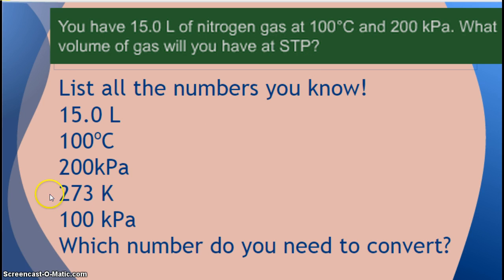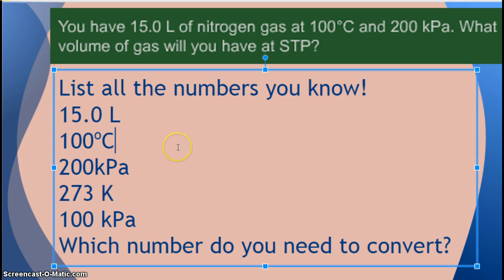They said STP. I know my standard temperature is 273 Kelvin. My standard pressure is 100 kilopascals. So, ooh, what number do we have to convert? We have to convert our degrees Celsius, right? So we're going to take our degrees Celsius and add 273, and we get 373 Kelvin, because your temperatures all have to be in Kelvin when doing the math problems.